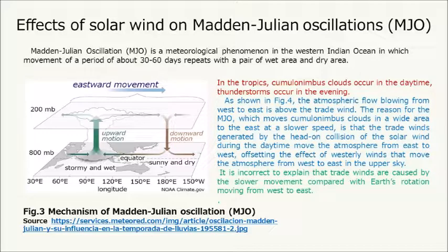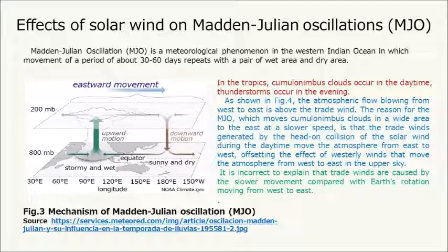The Madden-Julian Oscillation (MJO) is a meteorological phenomenon in the western Indian Ocean in which a movement with a period of about 30 to 60 days repeats, with a pair of wet and dry areas. In the tropics, cumulonimbus clouds occur in the daytime and thunderstorms occur in the evening. The atmospheric flow from west to east is above the trade wind. The reason for the MJO — which moves cumulonimbus clouds in a wide area to the east at a slower speed — is that trade winds generated by the head-on collision of the solar wind during the daytime move the atmosphere from east to west, offsetting the westerly winds in the upper sky. It is incorrect to explain trade winds as caused by slower movement compared with Earth's rotation.